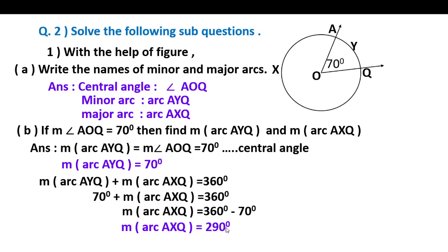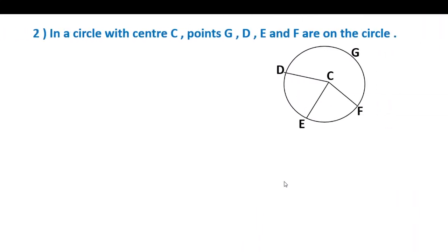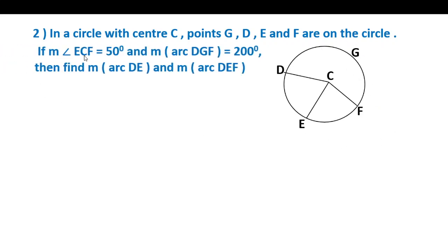Question number 3: In a circle with center C, points G, D, E, and F are on the circle. If measure of angle ECF equals 50 degrees and measure of arc DGF equals 200 degrees, then find measure of arc DE and measure of arc DEF.